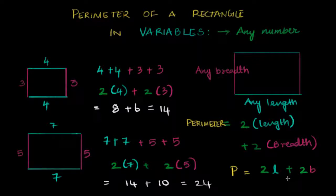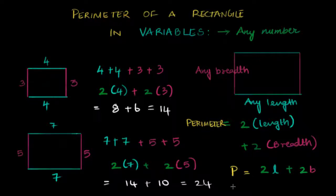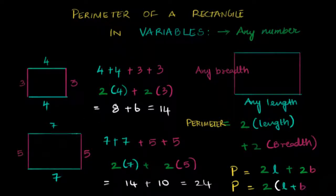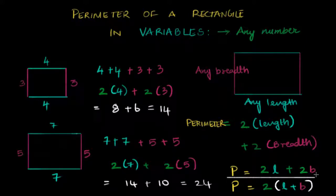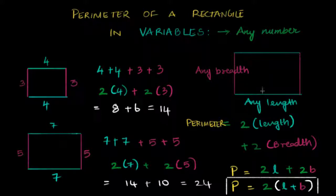I look at this and do one last step. In math, we want to make it as small as we can. This two appears twice, so I can factor it out. I write P equals two times (length plus breadth) in brackets. So there you have it — this is the shortest way to write the perimeter of a rectangle. If you're asked to write the perimeter of a rectangle in variables, this is what we write: it's two times the sum of the length and breadth. Add the length and breadth and multiply it by two.